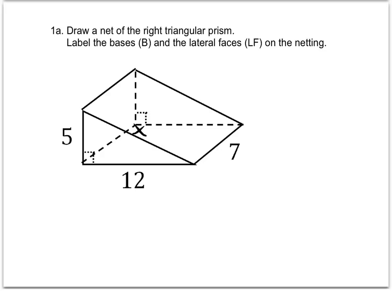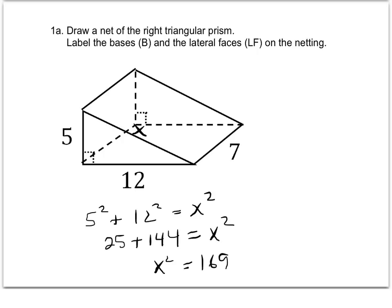Labeling the unknown side as x, we set up the equation: leg squared plus leg squared equals hypotenuse squared. Solving gives us x² = 169, and since that's a perfect square, x = 13. So the hypotenuse of the triangular base is 13.